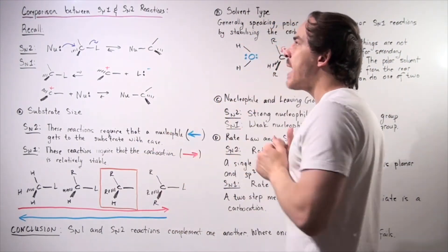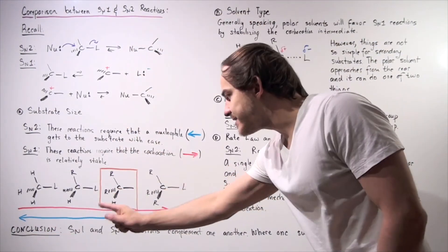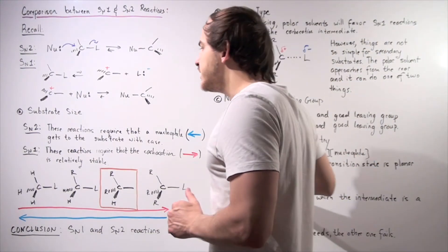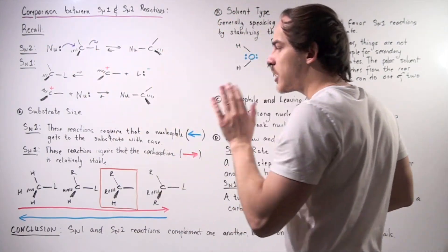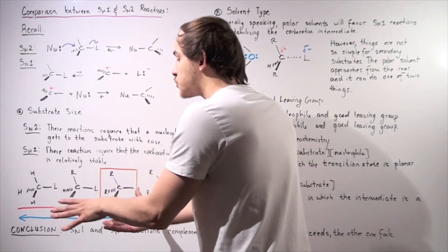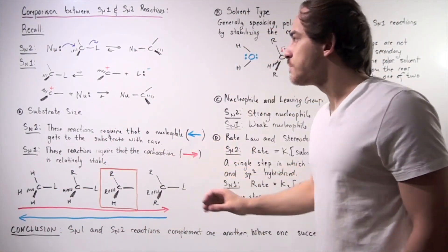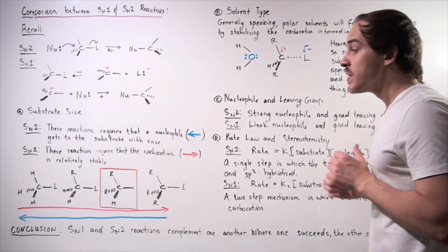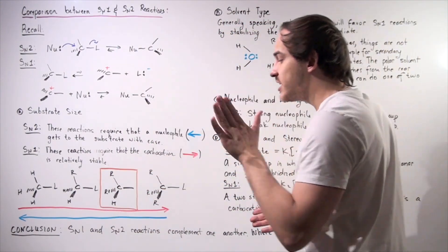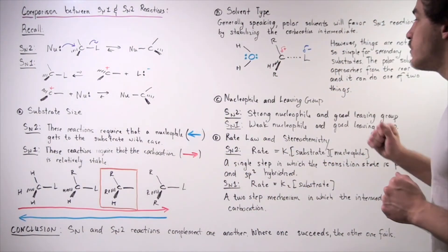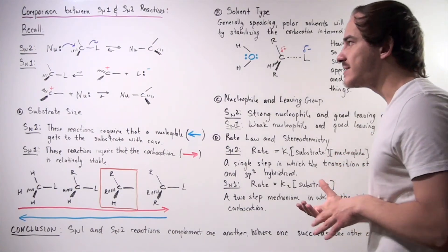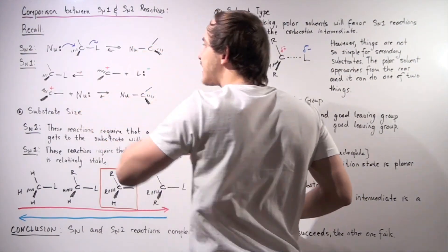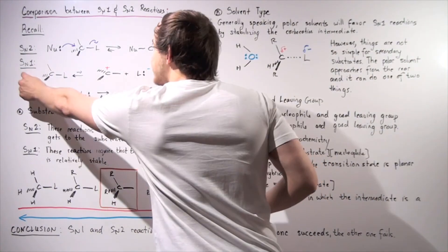So what can we conclude from this comparison? SN1 and SN2 reactions complement one another in the sense that where one succeeds, the other fails. SN2 reactions are favored for methyl or primary substrates. For tertiary substrates, SN2 reactions fail but SN1 reactions succeed because of a stabilized carbocation intermediate. For secondary substrates, we must consider solvent type, nucleophile, and leaving group — strong nucleophiles and good leaving groups favor SN2, while poor nucleophiles and good leaving groups favor SN1.